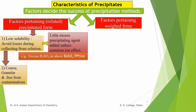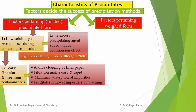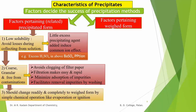The second factor is that the precipitate must be coarse, granular, compact, and free from contaminations. Such a precipitate avoids clogging of the filter paper, making filtration easy and rapid. It also minimizes absorption of impurities and facilitates their removal by washing. The third factor is that the precipitated form should change readily and completely to the weighed form by simple chemical operations like evaporation or ignition.